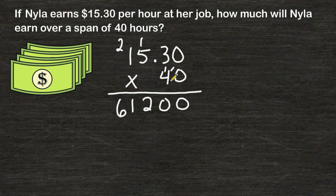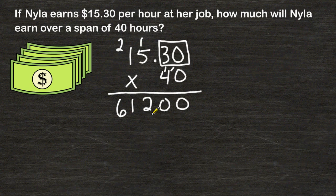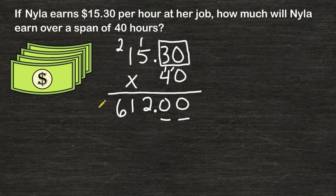Now in our problem, we have exactly two place values written after our decimal, so the same must hold true for your answer. We must write the decimal in this location, so we also have two place values after the decimal as we do in our problem. So we would say that over a span of 40 hours, Nyla earned $612 even.